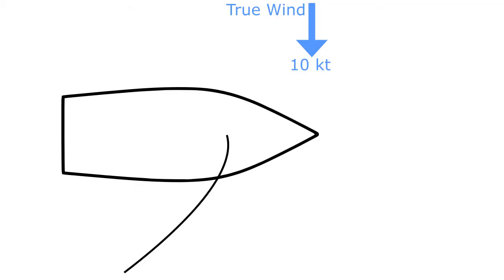So what is apparent wind? Well, it is the wind that you experience while you're sailing. This is different from the wind that you experience standing on shore. We call that wind the true wind, and you only feel it when you are stationary.